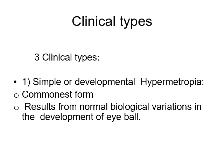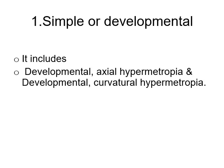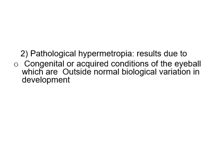There are three clinical types of hypermetropia. First is simple or developmental, which is the commonest form. It results from normal biological variations in the development of the eyeball — including developmental axial hypermetropia and developmental curvature hypermetropia. Pathological hypermetropia results from congenital or acquired conditions of the eyeball outside normal biological variation.